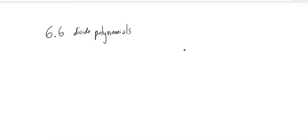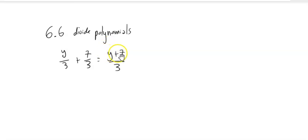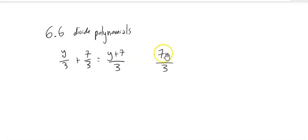One of the basic things I want us to think about is the relationship between having a common denominator and how we can put that together. Notice when we see something like (y + 7) divided by 3, both the y and the 7 are being divided by the 3. That is very different than 7 times y divided by 3 — in that case, 7y is multiplied together and then divided by 3. In the first case, both pieces are divided by 3. Different things.